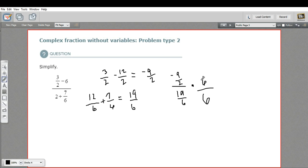So 9 halves times 6, well, 6 times 9 is 54. Divide that by 2, I get 27. So that's a negative 27 on the top. And on the bottom, 19 sixths times 6, the 6s just cancel. So I get 19. And there I am. I've arrived at an answer. So that didn't take us too many steps to get to negative 27 19ths.